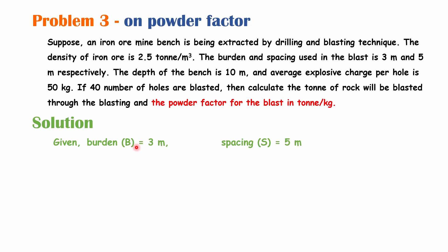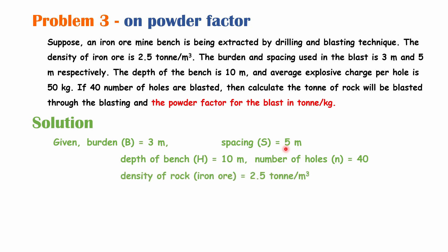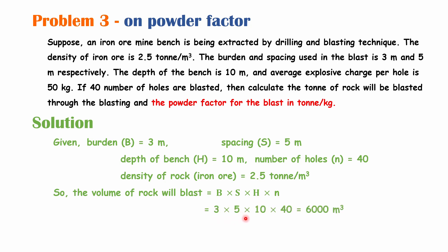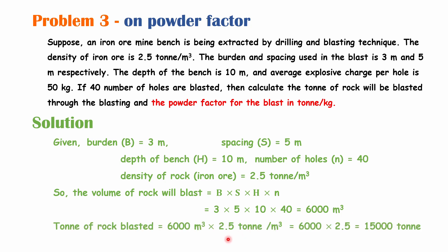Given: burden = 3 m, spacing = 5 m, depth of bench = 10 m, 14 blast holes, density of rock = 2.5 ton per meter cube. The volume of rock blasted = burden × spacing × depth × number of blast holes = 3 × 5 × 10 × 14 = 2100 m³. Wait — the calculation shown gives 6000 m³ using 40 holes. Multiplying by density 2.5 gives 15,000 ton of rock blasted.